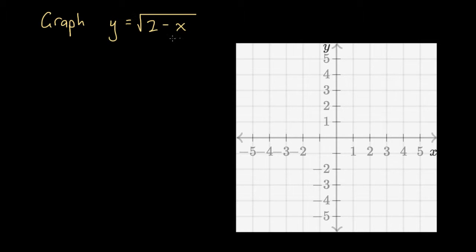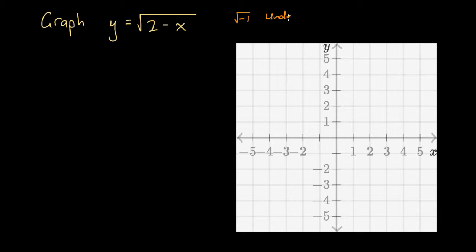The first thing we should always do when we've got an x inside a square root sign is to consider the domain of this function. The domain is all the possible x values we could input into the function and get valid y values out. The restriction is that whatever is within the square root sign has to be greater than or equal to 0, because the square root of a negative number like -1 or -2 is undefined — we can't associate that with a real number.